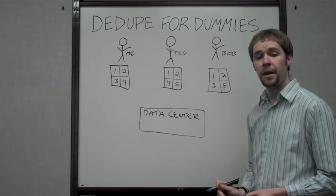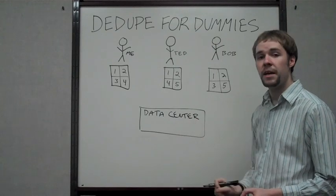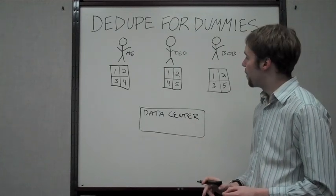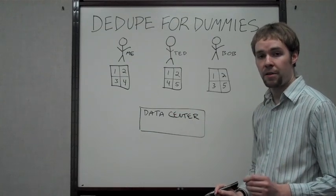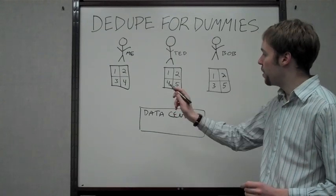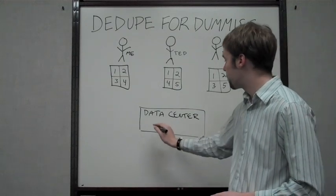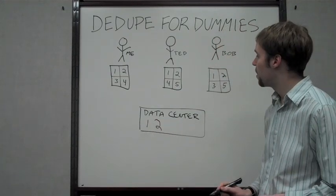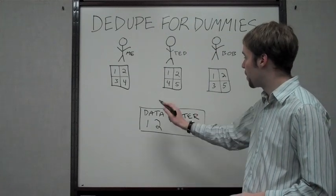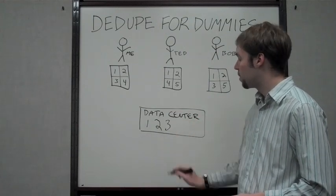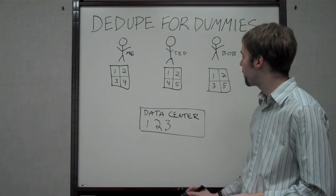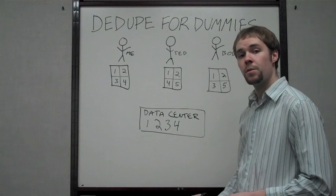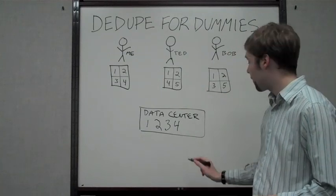All of us are going to be backing up our files to the same data center. The software, the Powered by 9 software, will figure out exactly what blocks are unique and only back those up in the data center. Each of us has blocks 1 and 2, so the data center is going to be protecting blocks 1 and 2 without any question. Not each of us has block 3, but two of us do, so we back up block 3. Two of us also have block number 4, so block 4 gets backed up. And two of us also have block number 5, so block number 5 gets backed up.